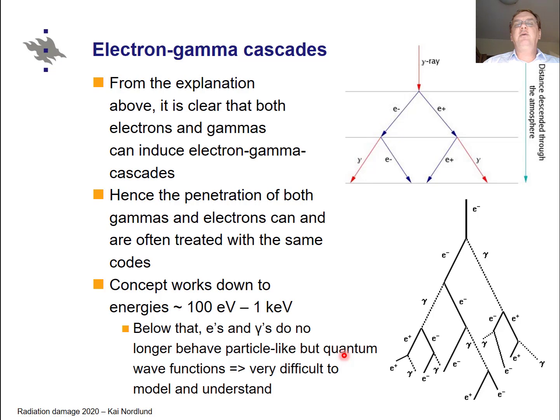For electrons, and actually now you realize one thing: we started talking about photons, but because electrons can do the same, you realize that now we also start understanding electron penetration in matter. So high energy electrons will also create gammas and other electrons, so this electron and photon stopping in materials is really intertwined at high energies. And indeed, also with computer simulations, these are quite often treated with the same codes. And this overall concept works down to quite low energies, around 100 eV to 1 keV. And the reason for this lower limit is that below this energy the electrons and gammas don't really behave like individual particles anymore but have the quantum wave character. And then this becomes much more difficult to understand - one cannot treat it in this relatively simple particle-like description given here.